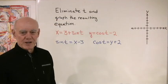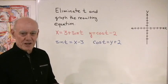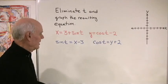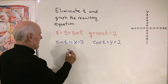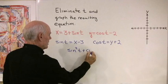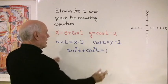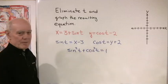Well here's what I know about sine and cosine, or at least one thing I know about sine and cosine. Sine squared plus cosine squared is always equal to 1. So I'm going to use that identity, sine squared t plus cosine squared t is equal to 1 to eliminate that parameter t.